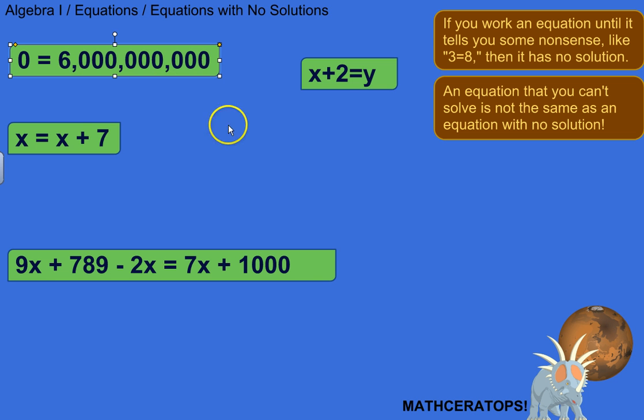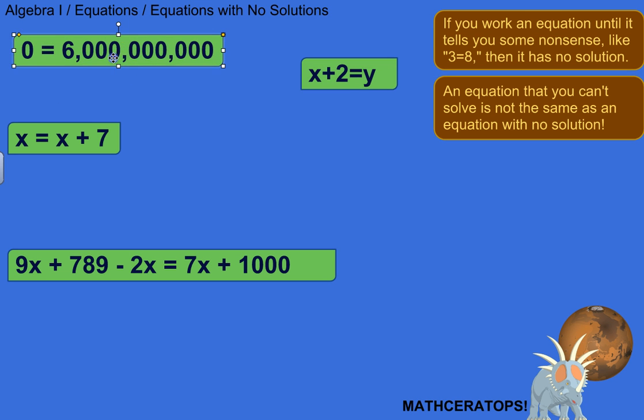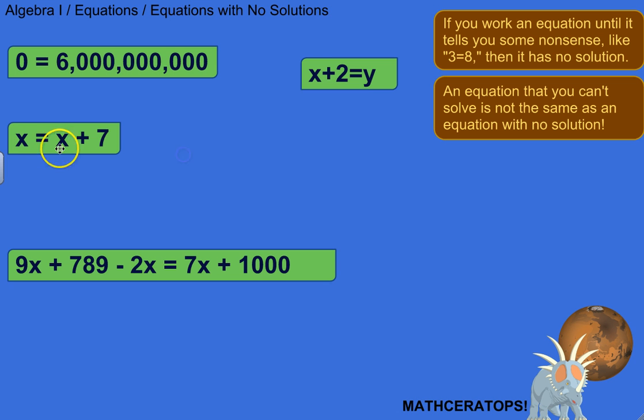But I'll show you that equations, even with lots of variables and things, equations without solutions basically amount to something ridiculous like this. So here's a slightly less ridiculous example. X equals X plus 7. And just intuitively, let's translate this into English. Some number is that same number plus 7. Or a number is 7 more than itself, which, of course, is nonsense.